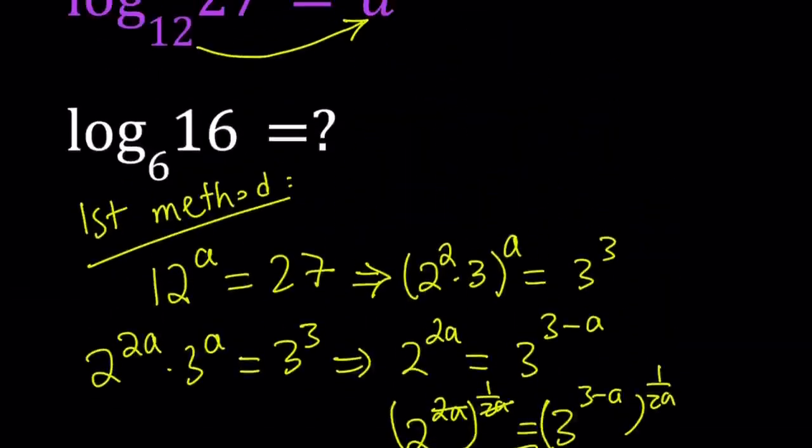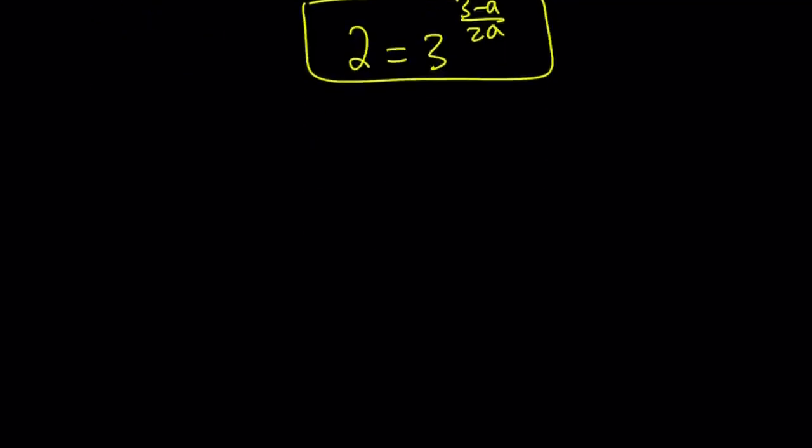Now, we're trying to evaluate this expression. Let's call that X. So log₆ 16 equals X. And again, by using the definition of logs, we can write this as 6^X equals 16. Remember, our goal is to find X in terms of A, and we have an equation for A.